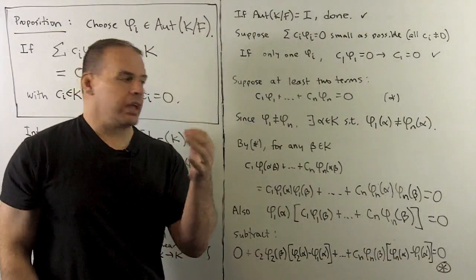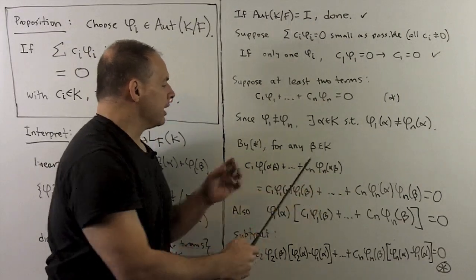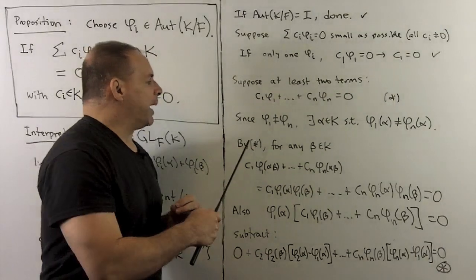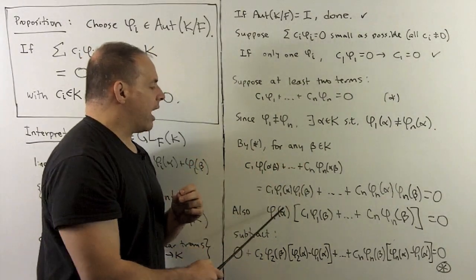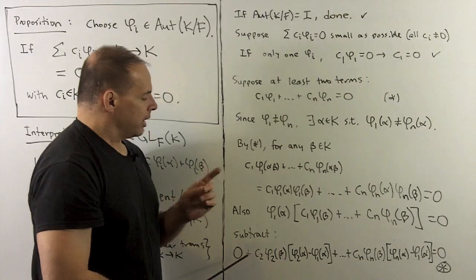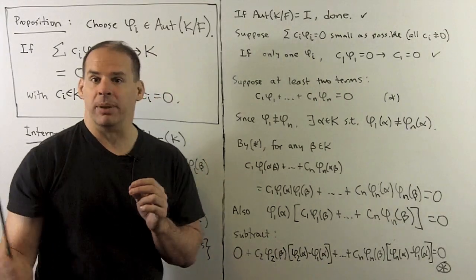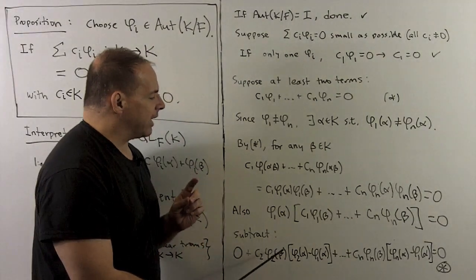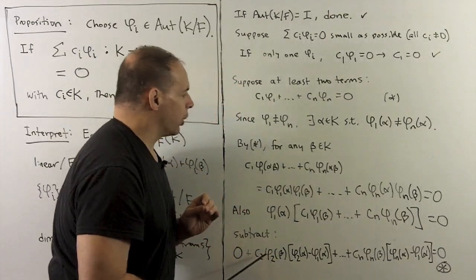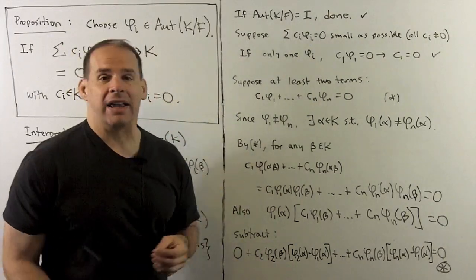For the next step, we take our relation and substitute αβ into it, where β can be any element of K and α has just been chosen. By the automorphism property, we can split the α and β parts out, and that must equal zero. We also take our relation with β in it and multiply by φ₁(α) — that's also zero. Taking the difference, the first term goes to zero. What's left are coefficients c₂(φ₂(α) − φ₁(α)) paired with φ₂(β), giving an expression with n−1 terms. This means our relation wasn't as small as possible — a contradiction — and that gives our result.